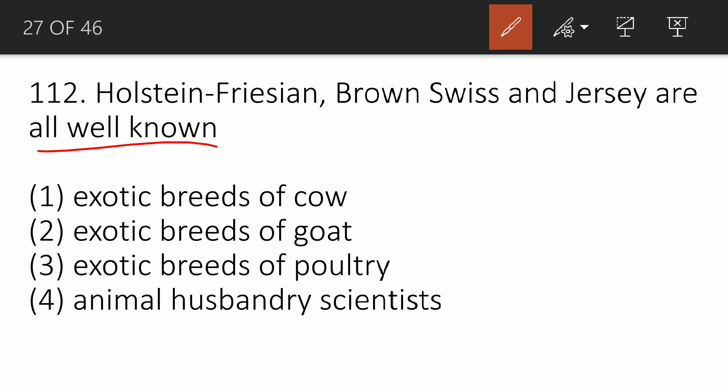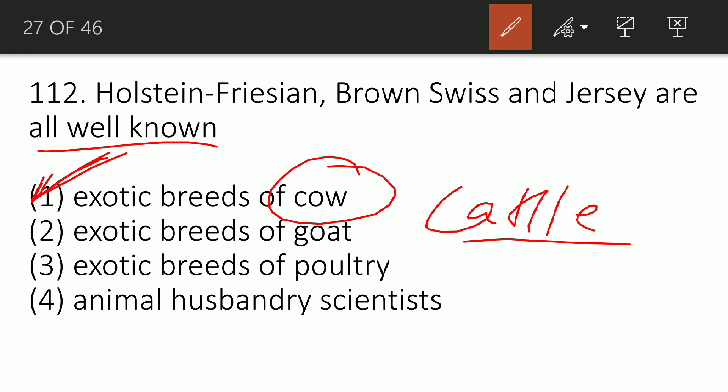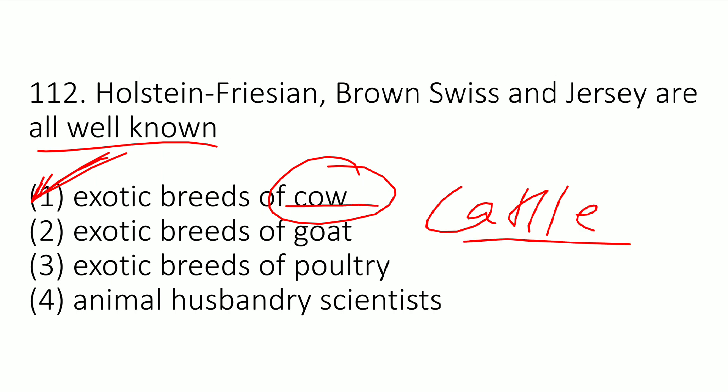Question 112: Holstein, Friesian, Brown Swiss, and Jersey are well known as what? Option A: exotic breeds of cow, B: exotic breeds of goat, C: exotic breeds of poultry, or D: animal husbandry scientists. The correct option is A — exotic breeds of cow. Holstein Friesian are from Holland, Brown Swiss from Switzerland, and Jersey from Ireland. These are exotic breeds of cattle, meaning cow.